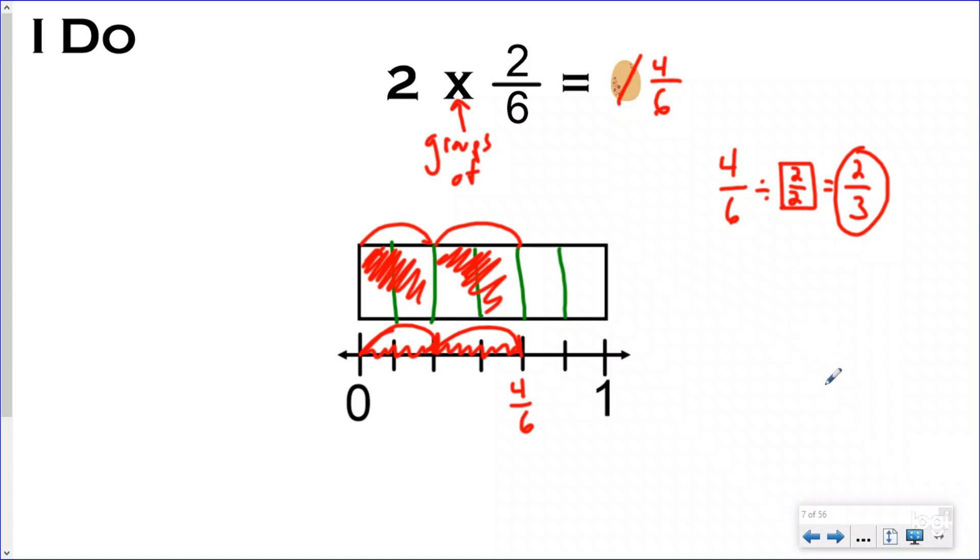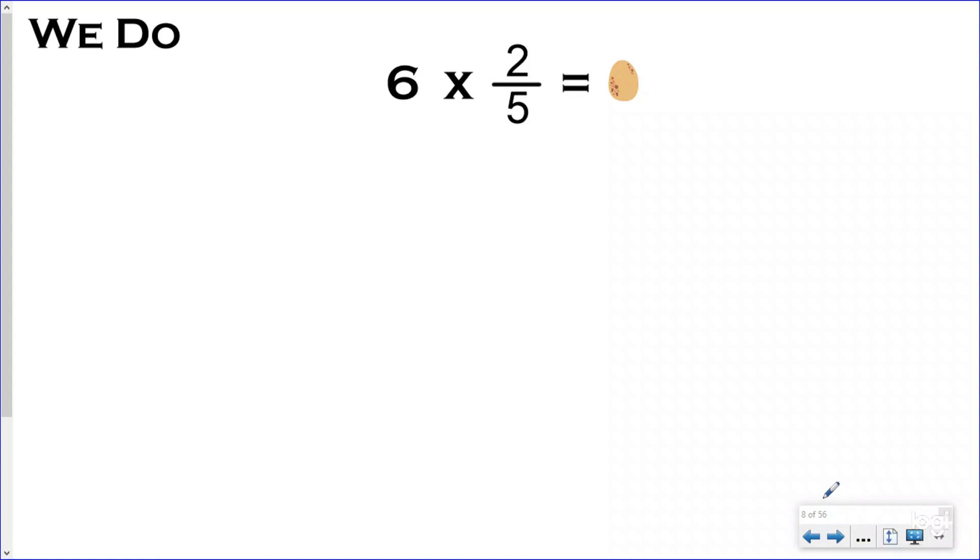Let's take a look at one that we can do together. So here we have 6 times 2/5. Again, we are trying to figure out what dinosaur, what fraction is inside of that variable egg, right? Not the proverbial egg in the chicken and which comes first, but the variable egg. This represents a number that we are trying to uncover using our paleontologist and fractionologist skills. So first of all, we're going to choose to read this multiplication problem as repeated addition, which means our times sign is going to be saying groups of. So really, I want to figure out if I have six groups of 2/5, what is my answer?